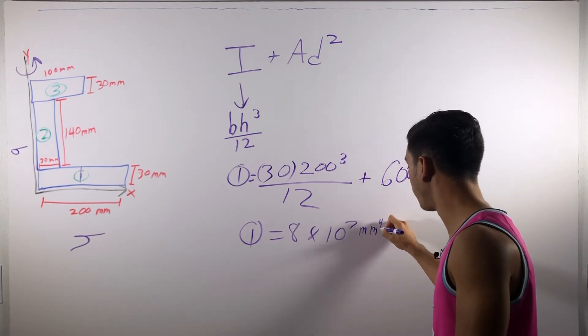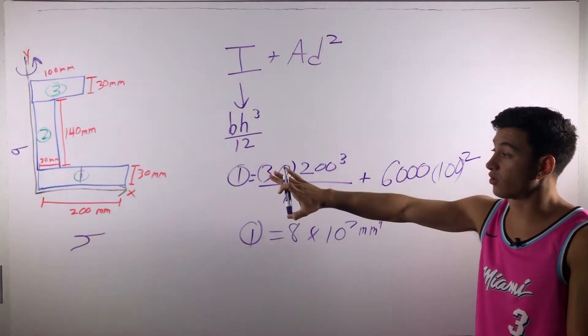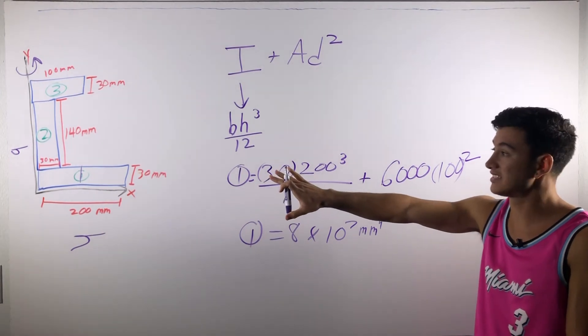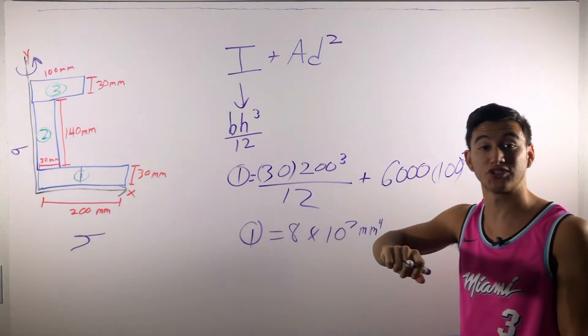So, in this case, millimeters, it's going to be to the fourth. So, this is the moment of inertia for section one about the y-axis. Let's go ahead and write that up here, clean this up, and work on section two.